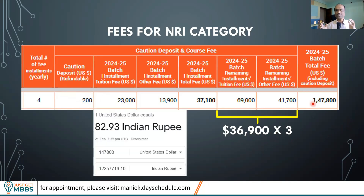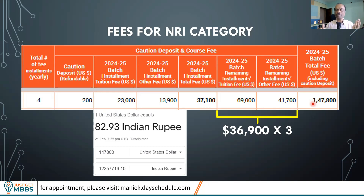Converting to Indian rupees at today's rate of 82.93 rupees per US dollar, the total college fees work out to about 1.23 crores. That's a reasonable fee compared to many deemed universities' NRI category costs — for example, Sri Ramachandra Porur charges around $260,000 US dollars. So if you are in the NRI category with a lower score but want a good college at reasonable fees, KMC Mangalore is a good choice.